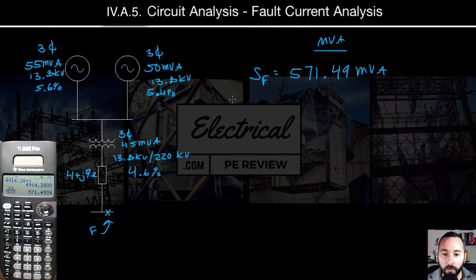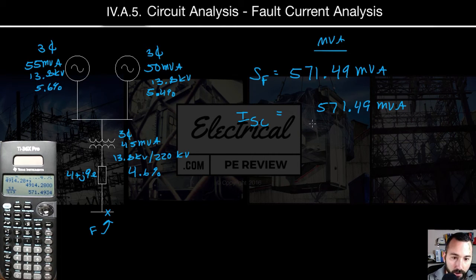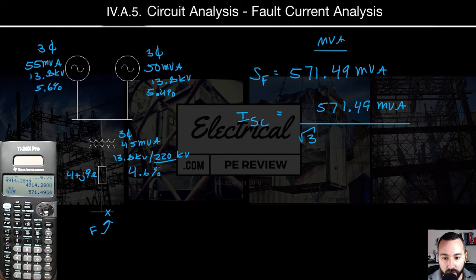All right. So this is our total fault power, right? So at this fault, that's the total amount of volt amps at that location. So all we have to do to find the short circuit current value or our fault current magnitude is use our three phase power formula. So we can say the current is going to equal 571.49 MVA divided by square root three times the line voltage at the fault. And that line voltage is going to be 220 kV.